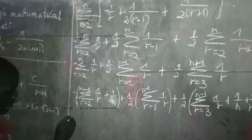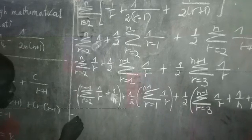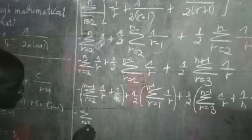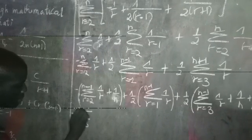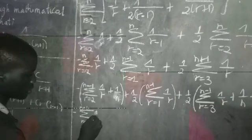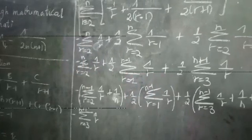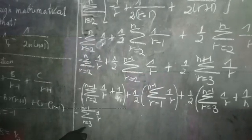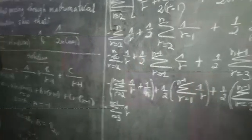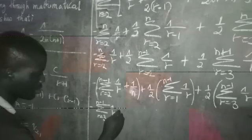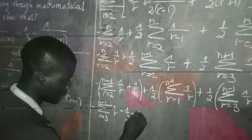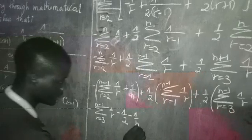Posing r equal to 3 here, I am obtaining a minus summation of r equal to 3 to n minus 1 of 1 on r. I must add the term which I removed, and the term which I removed was 1 all over 2. So I am adding the 1 all over 2 inside there to bring minus half, minus 1, and 1 on n plus.